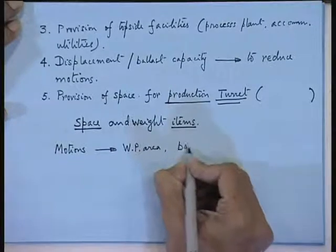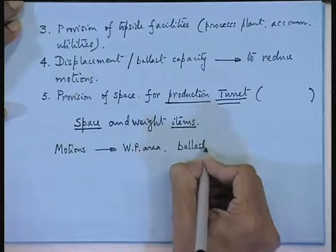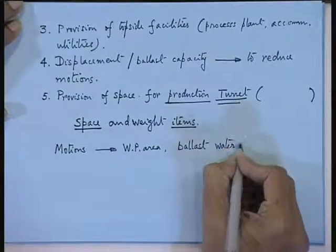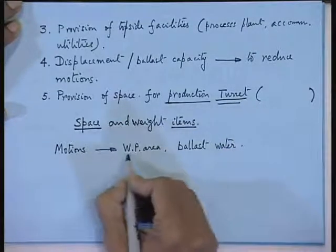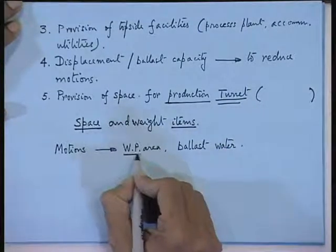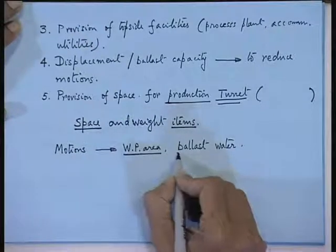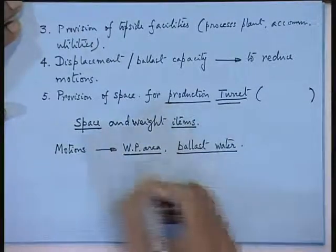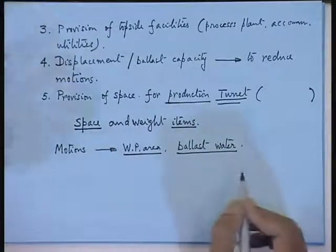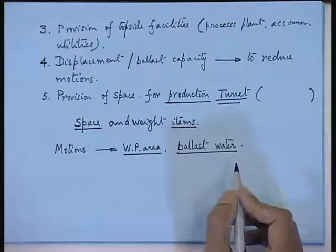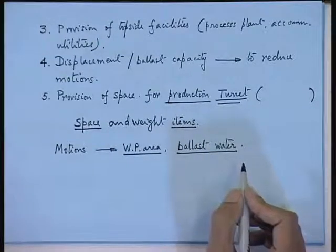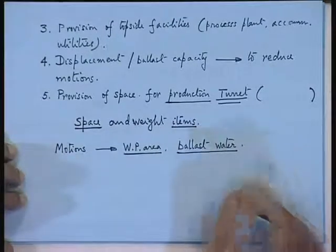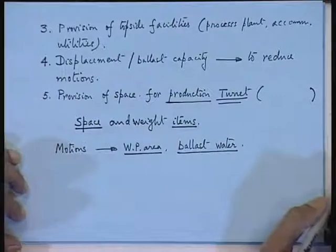You must have adequate water plane area and ballast water. However, if you keep increasing water plane area, you get large heave motions, and then you have to damp those motions by adding ballast. These are some of the drawbacks of having a ship-shaped hull form.